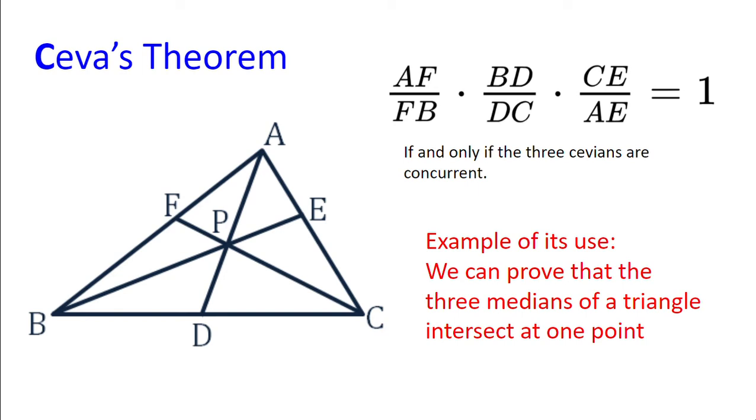With this we can prove that the three medians of a triangle intersect at one point. This is because AF divided by FB equals 1, BD divided by DC is also 1,